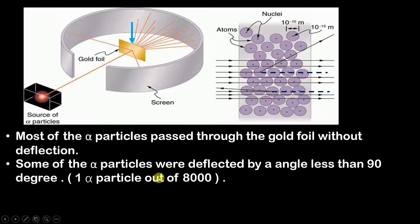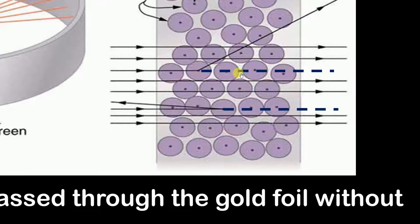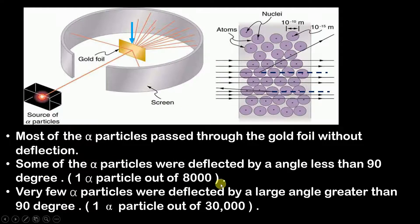Some of the alpha particles were deflected by an angle less than 90 degrees. Can you see this particle? This alpha particle, instead of traveling in a straight line, deflected from its path. The angle made by this deflected ray and the actual path is less than 90 degrees. The ratio was approximately one particle out of every 8000 alpha particles deflected in this fashion.